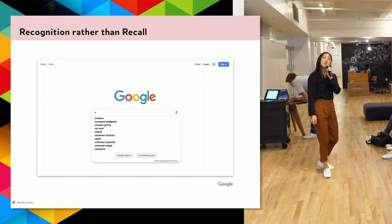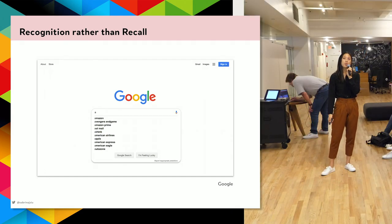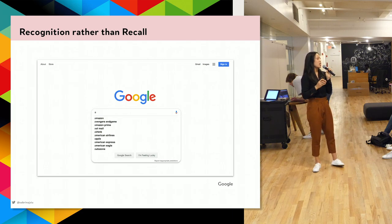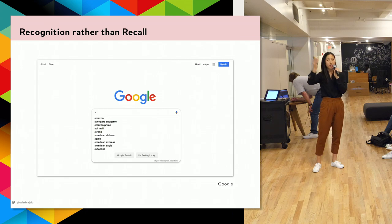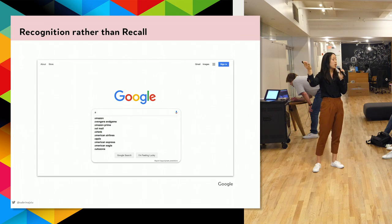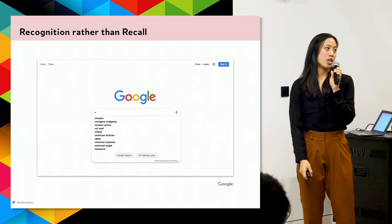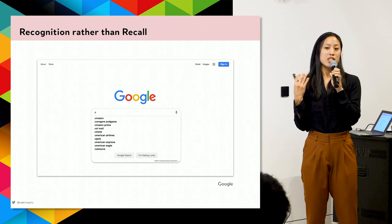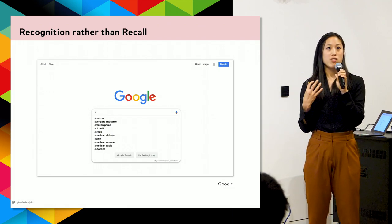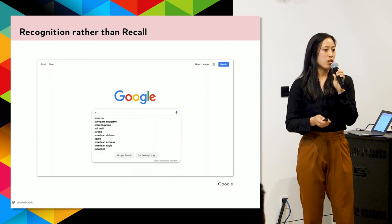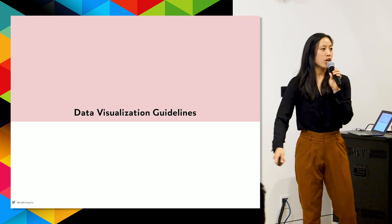Recognition rather than recall — we can only remember about five things at a time, so if we want users to remember more, the system should help them, like Google showing previous searches. An offline example: when I see a Chinese character, it's much easier for me to recognize it than to write it from scratch — that's recognition rather than recall.